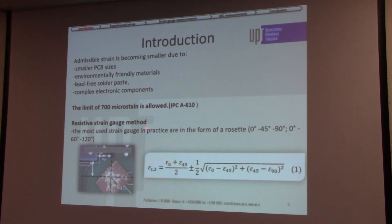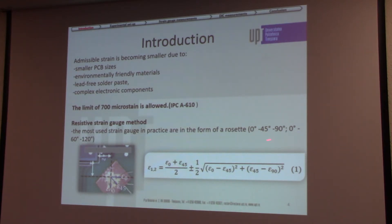Strain gauge rosettes are placed at the corners of the component, at about 2.5 mm from the corner. The most commonly used in practice are rosettes of 0°, 45°, and 90°. Using these, it is possible to calculate the maximum and minimum principal strain.